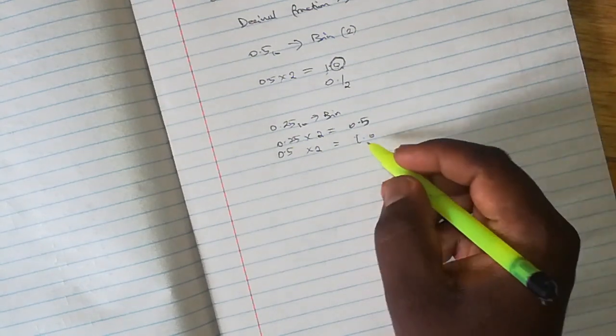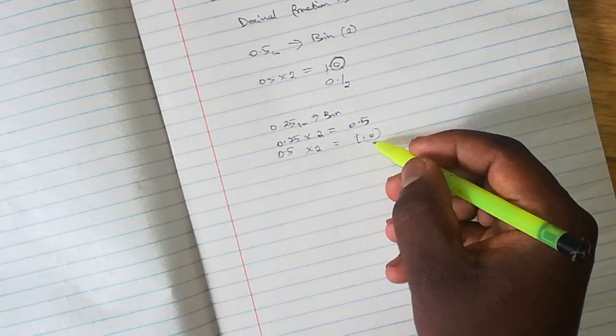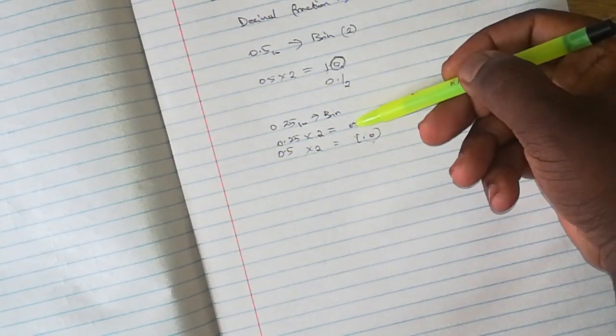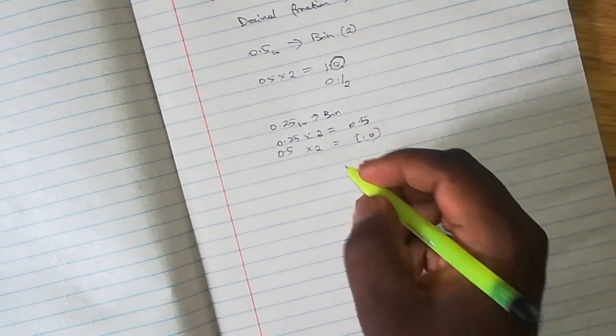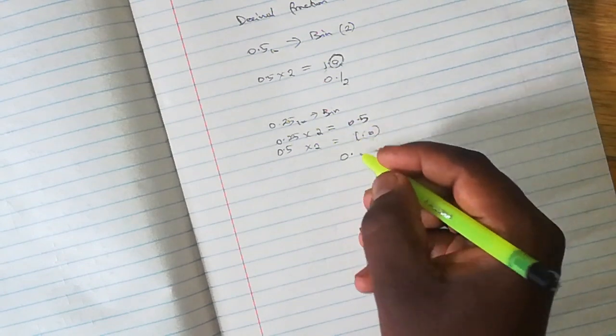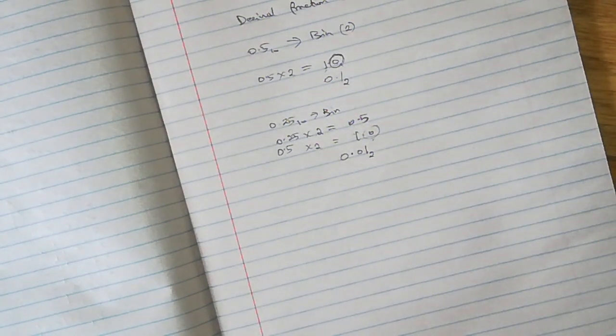Now at this point our fraction of the product is 0, so that's where we stop. And then we note down the whole number parts of our products beginning with 0 and then 1. So our answer is 0.01 base 2.